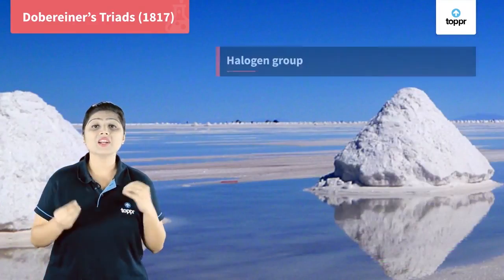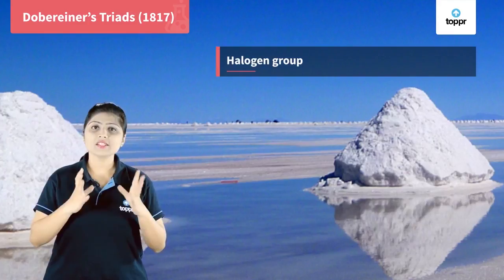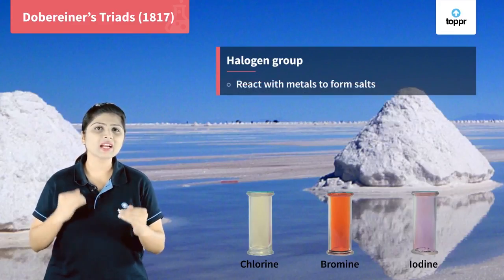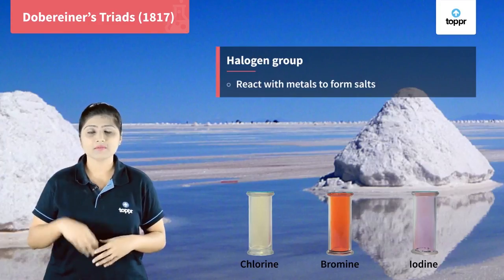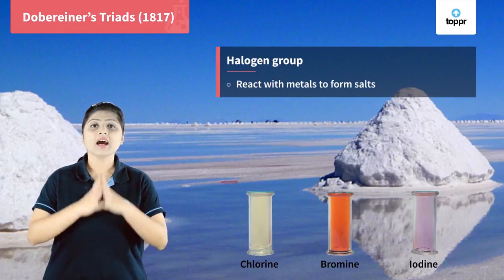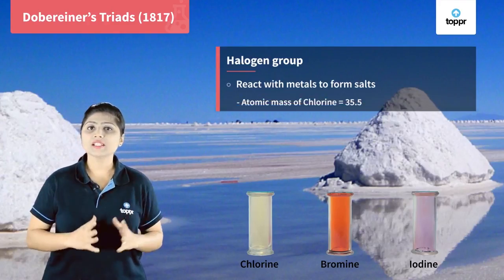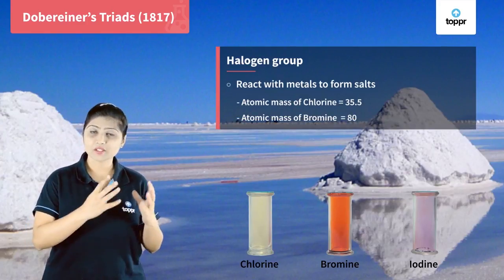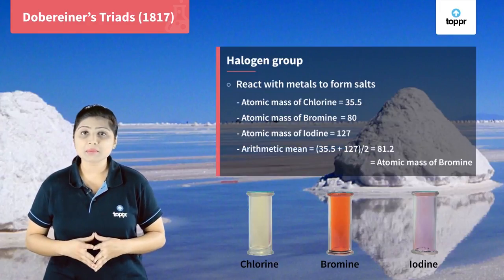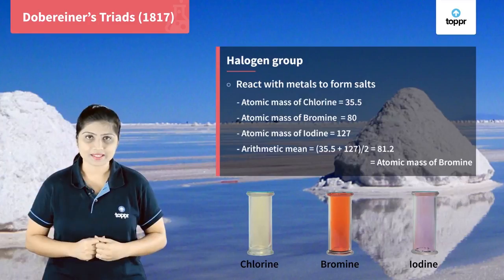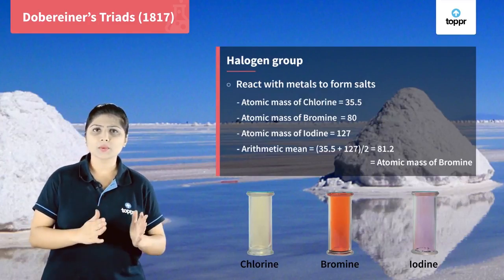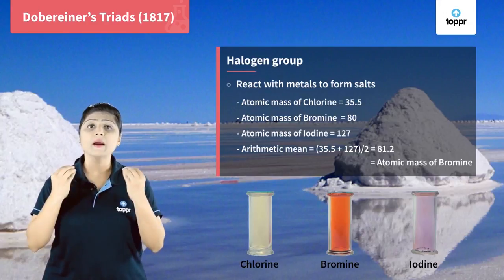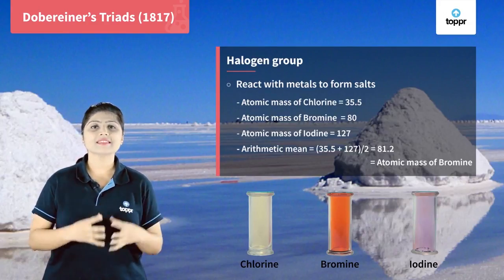The other group is the halogen group formed by Döbereiner, containing chlorine, bromine, and iodine. These are called halogens because they react with metals to form salts — halide salts which are usually found in the sea. Chlorine's atomic mass is 35.5, bromine's is 80, and iodine's is 127. Taking the arithmetic mean of chlorine and iodine: (35.5 + 127) / 2 = 81.5, which is approximately equal to the atomic mass of bromine. Again, this is a Döbereiner's triad.